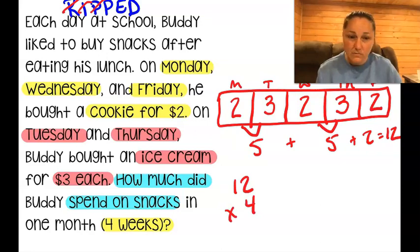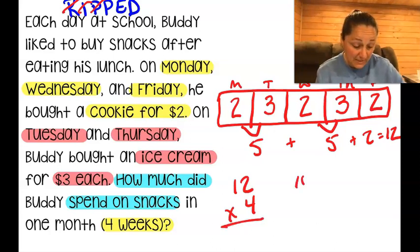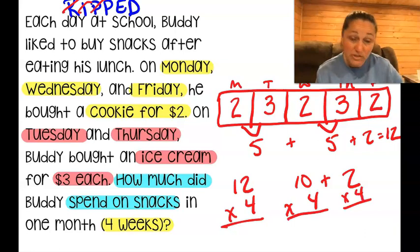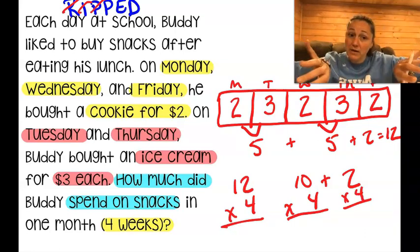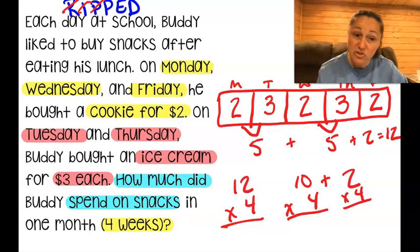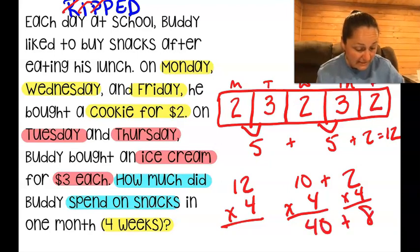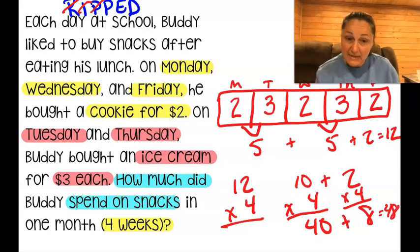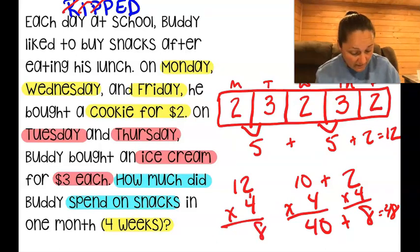What if I don't know 12 times 4? Well, 12 is the same as 10 plus 2. I can multiply both by 4 — that's the distributive property. Break it apart using expanded form. 2 times 4 is 8, and 10 times 4 is 40. 40 plus 8 is 48. Writing it the standard multiplication way: 4 times 2 is 8, 4 times 1 is 4, giving 48.